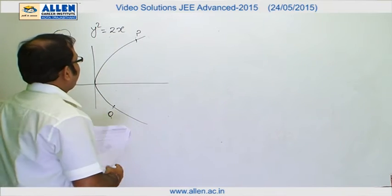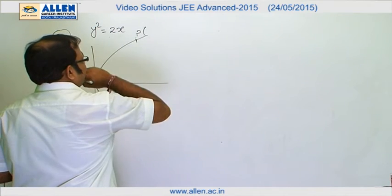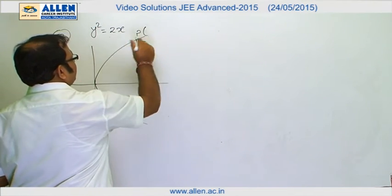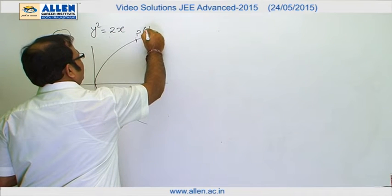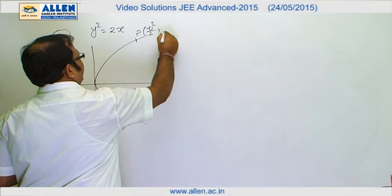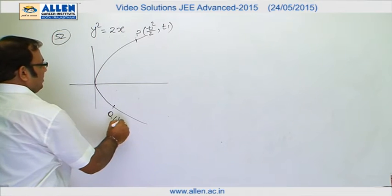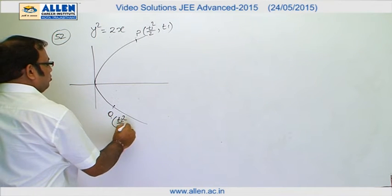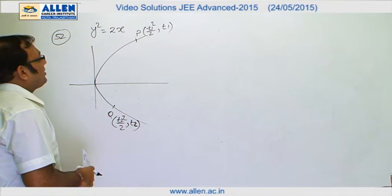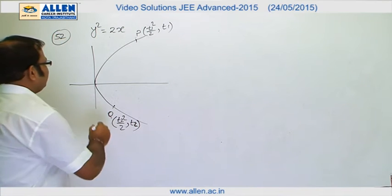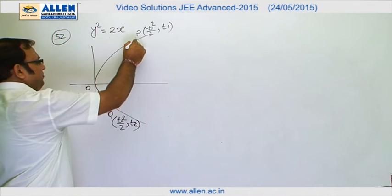So we can take its parameter as at1², so a's value here is half, so at1² = t1²/2 and 2at1, so I can take it as t1. And then you have got here t2²/2 and t2. So these are the parameters of the point.